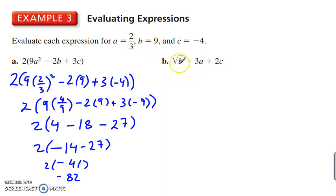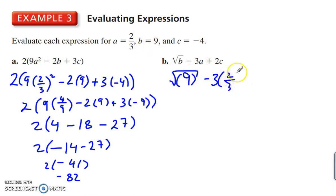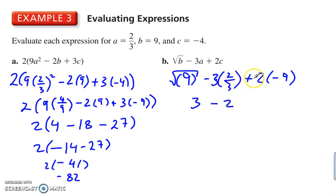Here, a similar situation — we replace three different values. 3 times 2/3, plus 2 times negative 4. The square root of 9 is 3; the 3s cancel out, leaving 2. 2 times negative 9 is negative 18. 3 minus 2, going left to right, is 1. Minus 18 is negative 17.